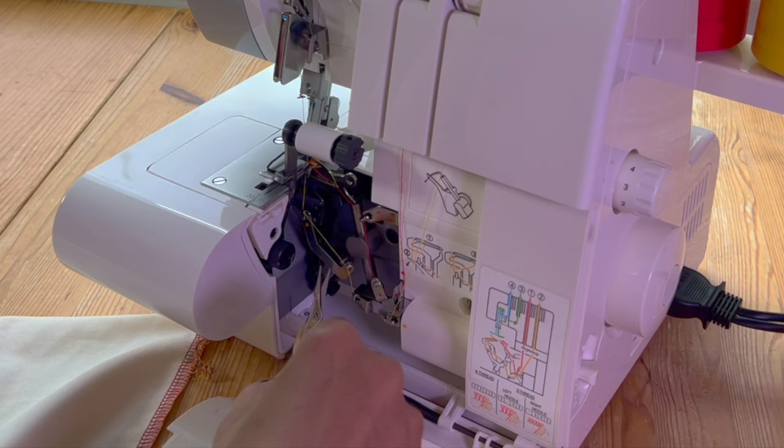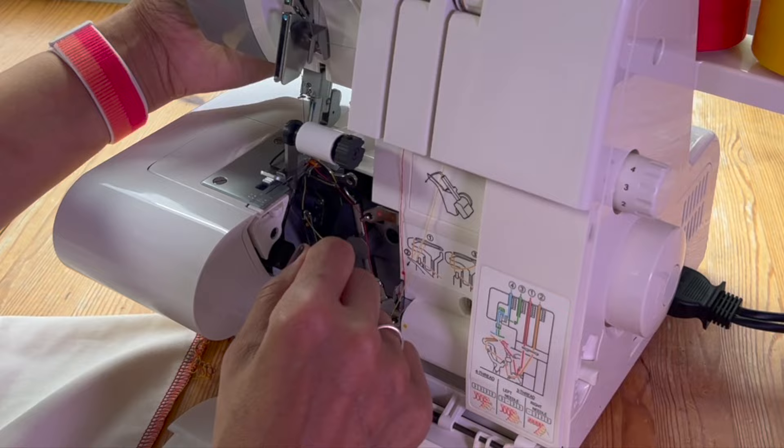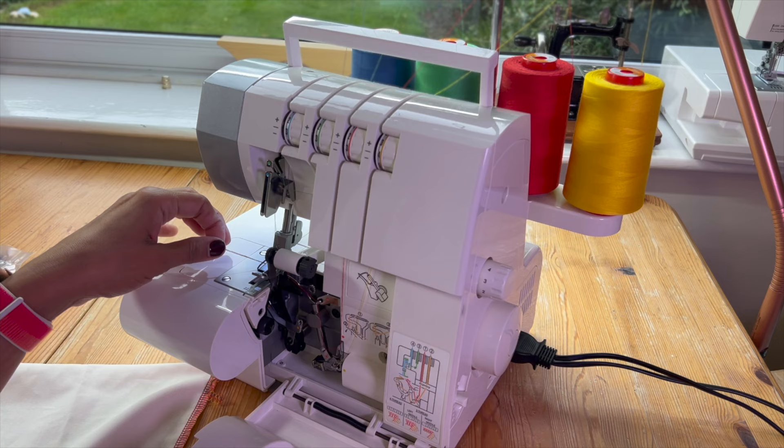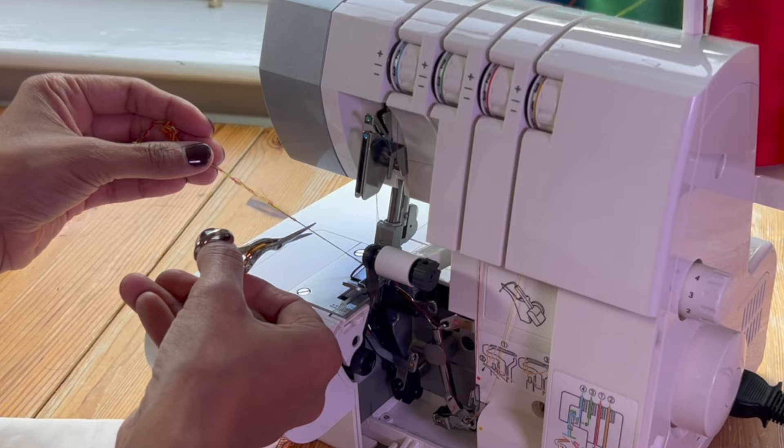So what I'm going to do is I'm just going to cut the thread. Let's cut it here. And I'm going to just pull the yellow thread out. So we don't have any stitching going on anymore. We've just got three threads going on. So what I'm going to do is I'll snip that away. And now just make sure I've switched the machine off.